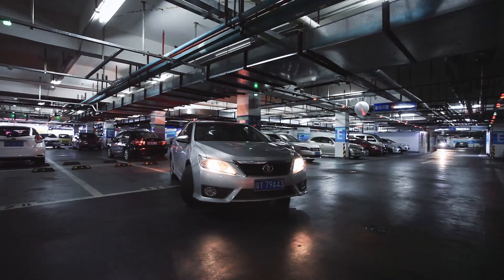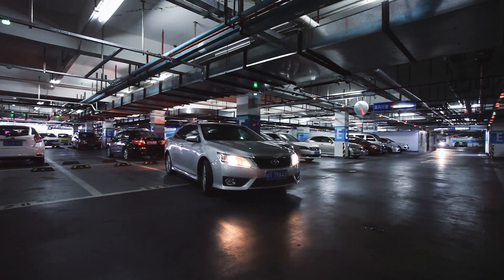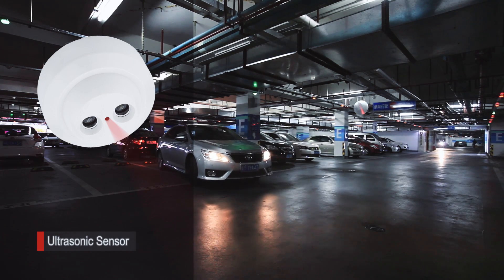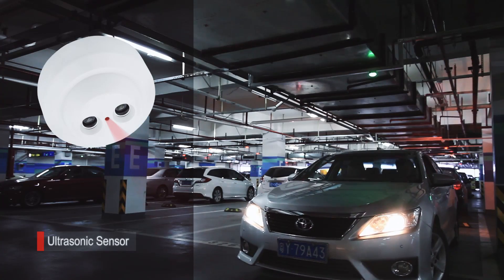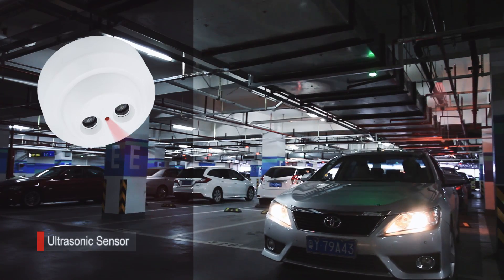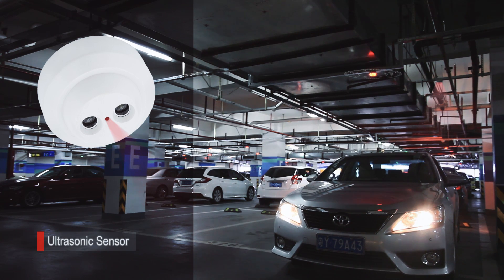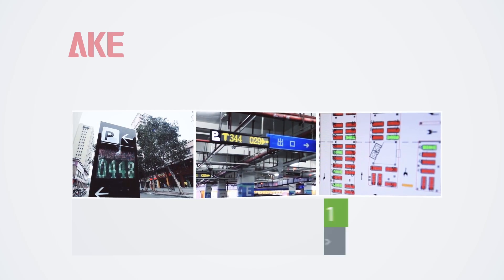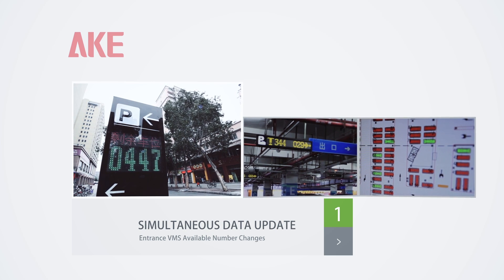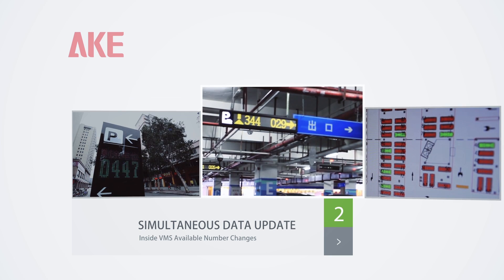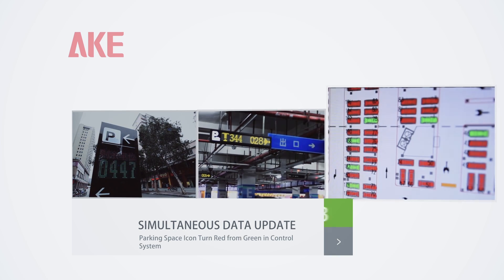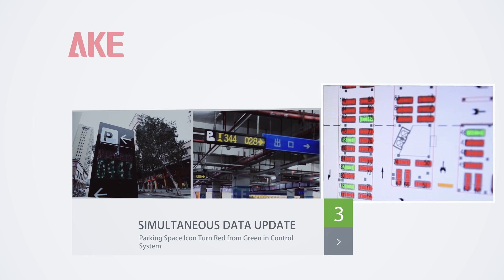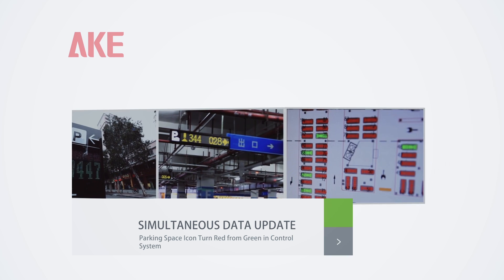After the vehicle is parked in the space, the ultrasonic sensor detects the occupancy of the space. The indicator light turns from green to red. Meanwhile, the VMS outside and inside changes the available number, as does the monitor system. The parking space icon turns from green to red in the software, indicating the space is occupied.